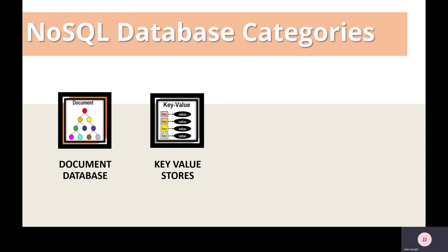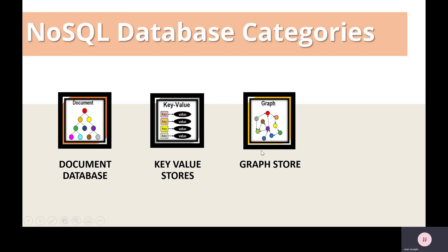In key-value stores, every single item in the database is stored as an attribute name or key together with its value. Examples include Memcached, Redis, and Azure Cosmos DB with SQL API or DynamoDB. The third category is Graph Store. Graph stores are used to store information about networks such as social connections.